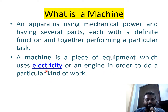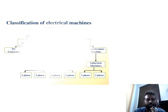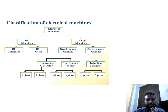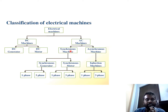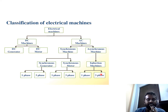The classification of electrical machines: electrical machines are classified into DC and AC machines. DC machines are further classified as DC generator and DC motor. AC machines are classified as synchronous machines and asynchronous machines. Synchronous machines are further classified as synchronous generator and synchronous motor. Asynchronous machines are classified as induction machines, single-phase and three-phase. Synchronous generator and synchronous motor are also classified as single and three-phase.